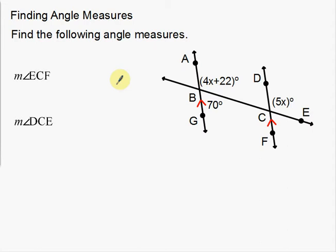So what I'm going to do is find the following angle measures. I have two angles: ECF and DCE. I'm going to do one at a time. Let's go ECF first. E is over here, C, and then F is down here. So ECF — we're looking at this blank angle down here. I'm going to use the other angles written down to help me find ECF.